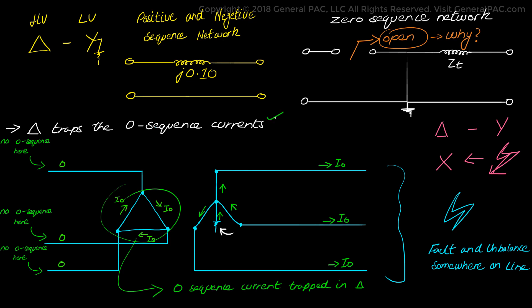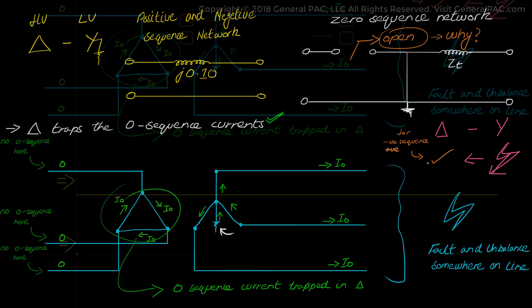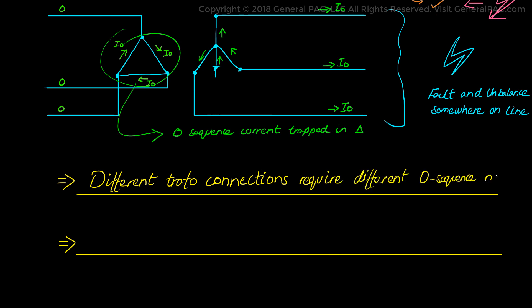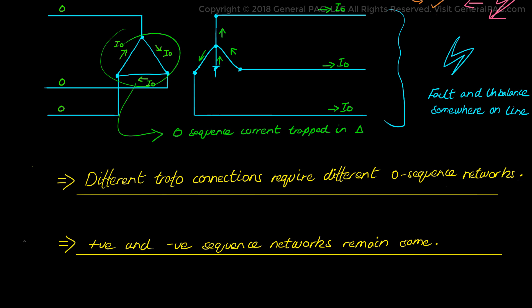This is only true for the zero sequence current. The transformer will have positive and negative sequence current reflected on the high voltage side, but it won't have zero sequence current. This concept requires a topic in and of itself, so we will keep this brief and continue with our example. Another thing to keep in mind is that different transformer connections will require different zero sequence network diagrams, even though the positive and negative sequence networks are the same. This is true for both two-winding transformers as well as three-winding transformers.